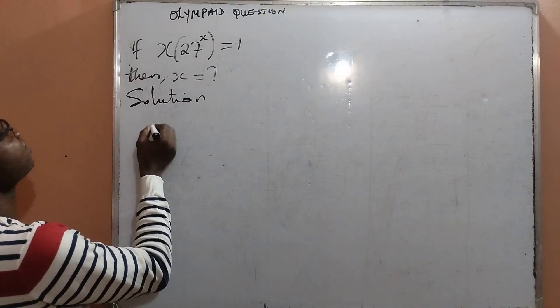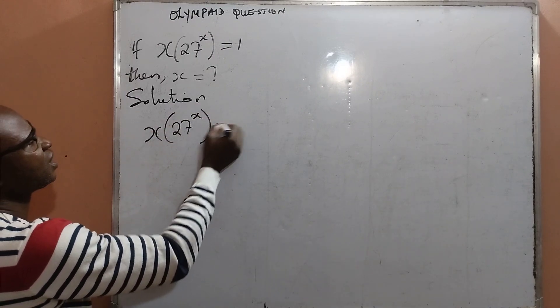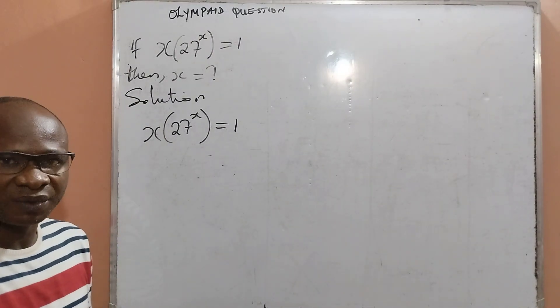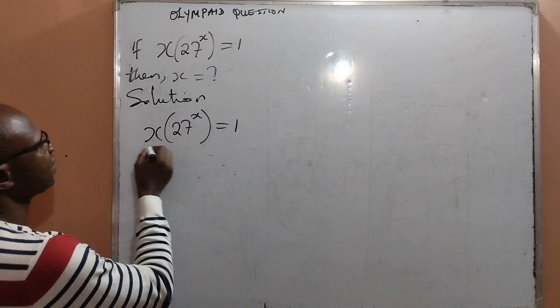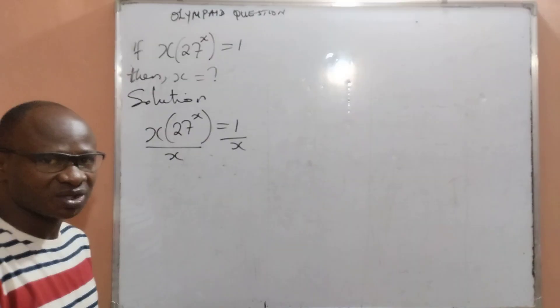Now the question is x multiplied by 27 raised to the power x equal to 1. I will begin this question by dividing both sides of the equation by x, and that means from the left hand side I will divide by x, also by the right hand side I will divide by x.